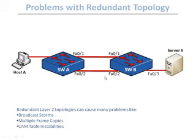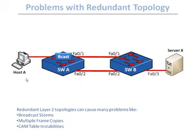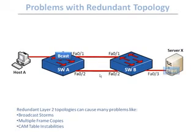Another problem associated with redundant topologies is multiple frame copies. Going back to the broadcast case — when switch A sent the broadcast to switch B, switch B had to send it through all ports except the originating one. That caused it to send through F02 but also through F03, so the switch received a copy of that broadcast.